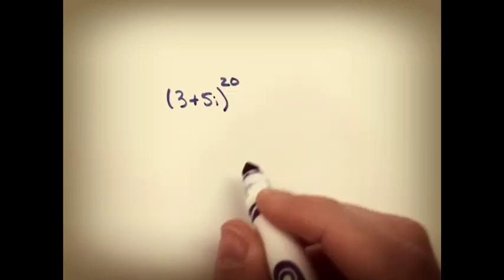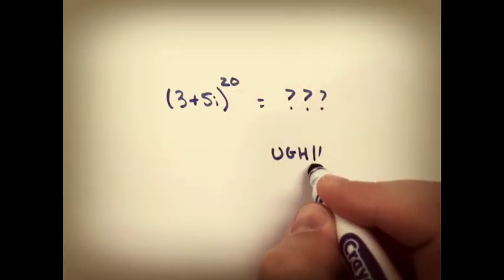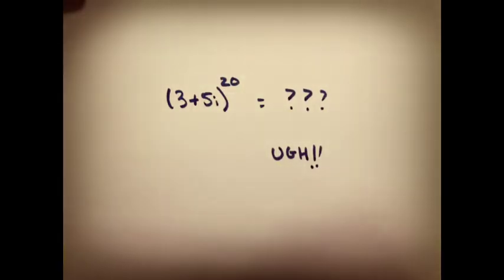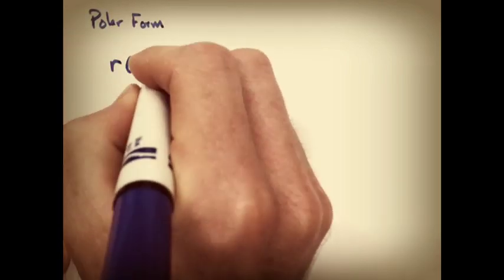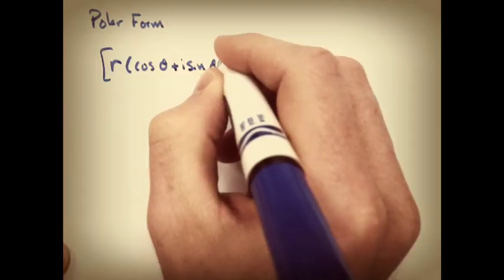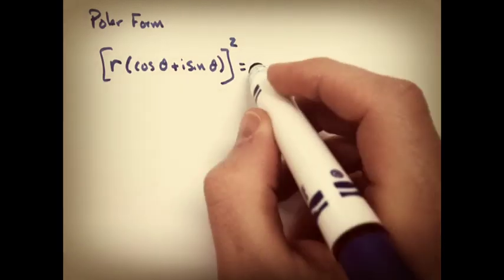But what if I took that same complex number and said, what's the 20th power? There's no way we would want to do that. So one easy way is to turn it into its polar form. Now its polar form is going to have an r and a theta, and we know that we could write it in r cosine theta.